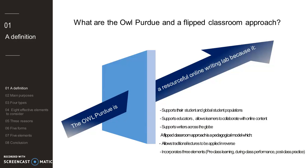OWL is a resourceful online writing lab with the objective to develop primary support for their student population of Purdue University, and the global body of professional ESL-EFL community who are looking for assistance in their development as writers through their online reference materials and services.